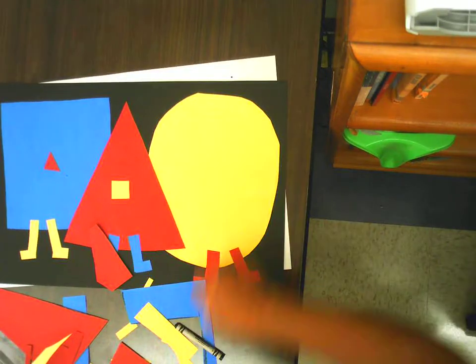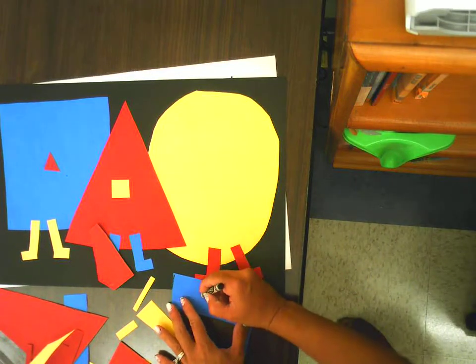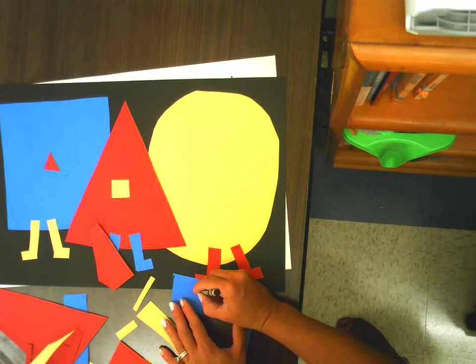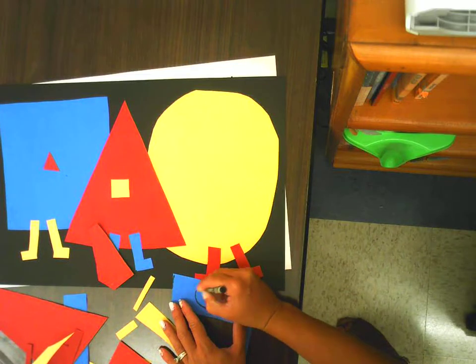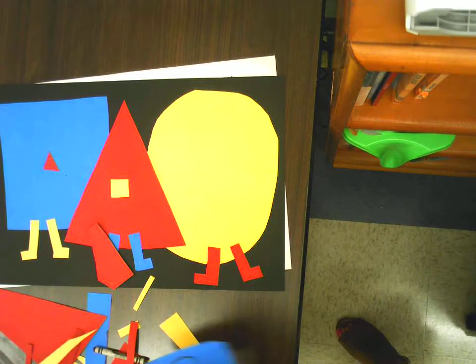And on the yellow shape, I am going to do a blue circle. Circle on circle, that's okay.